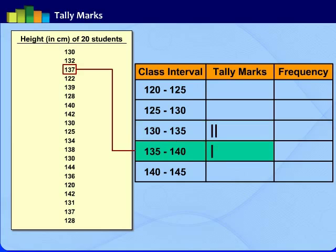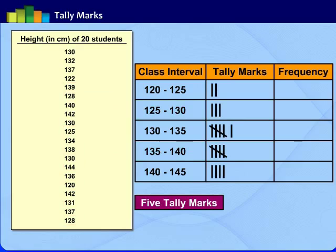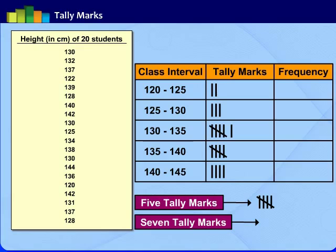Now, mark the other numbers in tally columns in whichever class it belongs. That is, one tally, for each value. If five tally marks are to be made, we mark four tally marks first and the fifth one across them in this way. So that it represents a cluster of five tally marks. To represent seven, we use a cluster of five tally marks and then add two more tally marks beside it as shown.